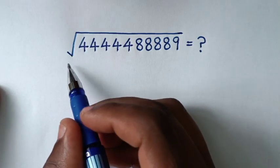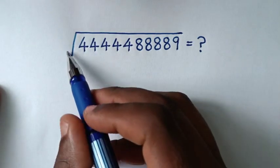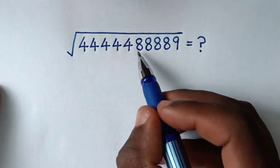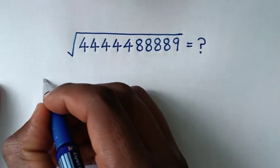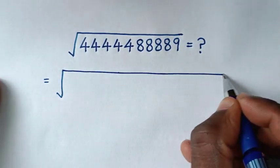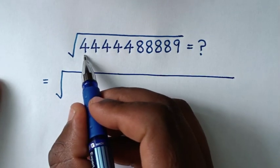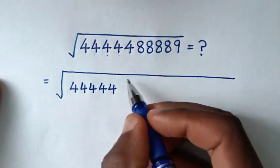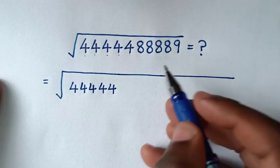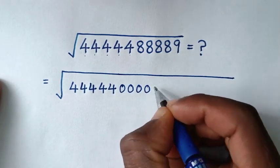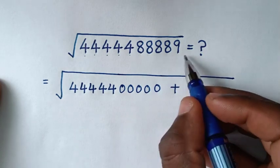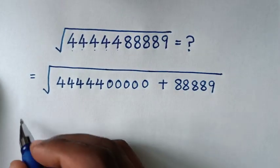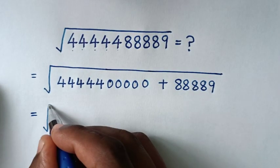Hello, you are welcome. We will solve this math problem to find the square root of this big number: 444448889. So it will be equal to the square root of — we have 1, 2, 3, 4, 5 fours: 44444, then the remaining digits are 88889.